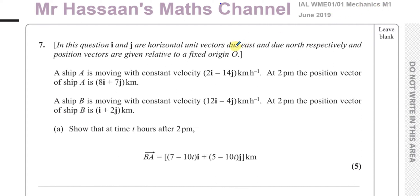This question is about a ship A — it's all about vectors. Ship A is moving with constant velocity 2i − 14j km/h, and at 2pm the position vector of ship A is 8i − 7j km. Ship B is moving with constant velocity 12i − 4j km/h. At 2pm the position vector of ship B is i + 2j km. Show that at time t hours after 2pm the vector B to A is equal to (7 − 10t)i + (5 − 10t)j km.